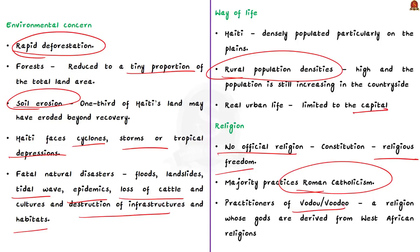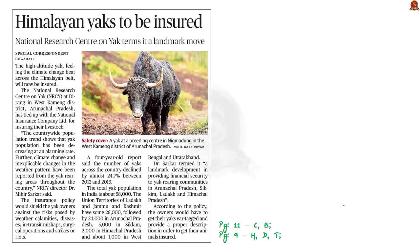With this, we have come to the end of the Haiti discussion. We saw important facts about Haiti's location, geography, history, climate, flora, fauna, economy, environmental concerns, and people. Now let us move on to the next news article.